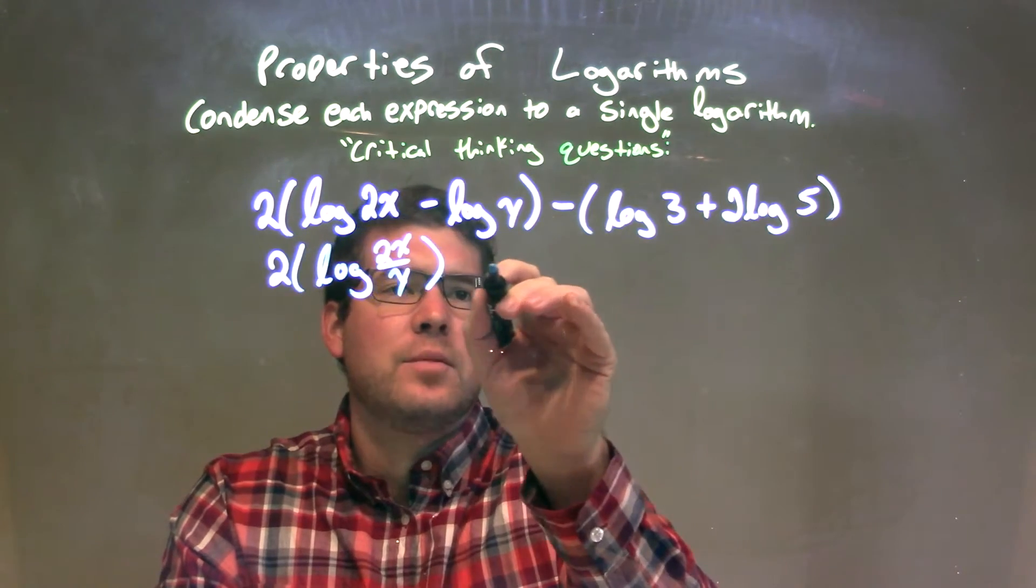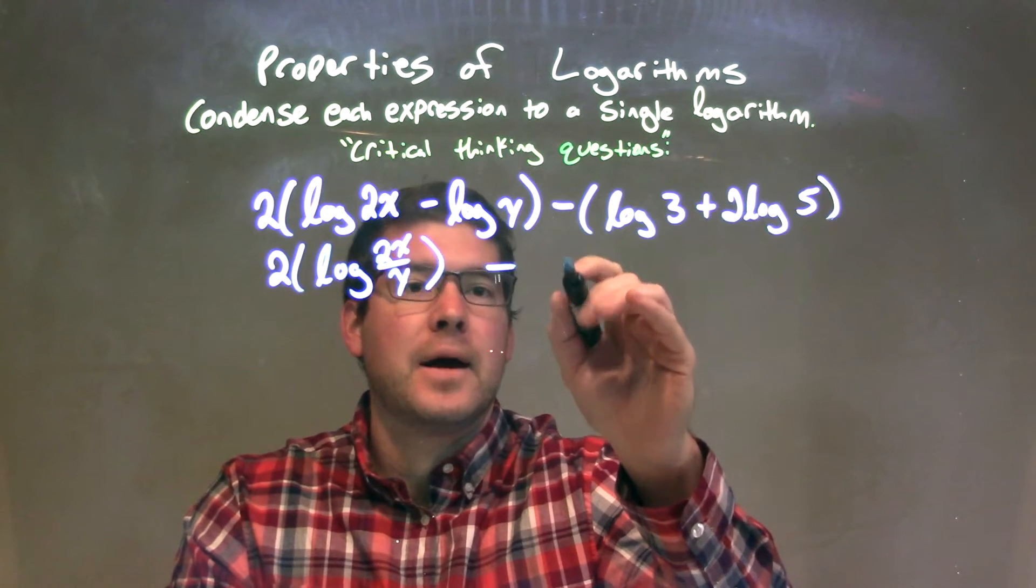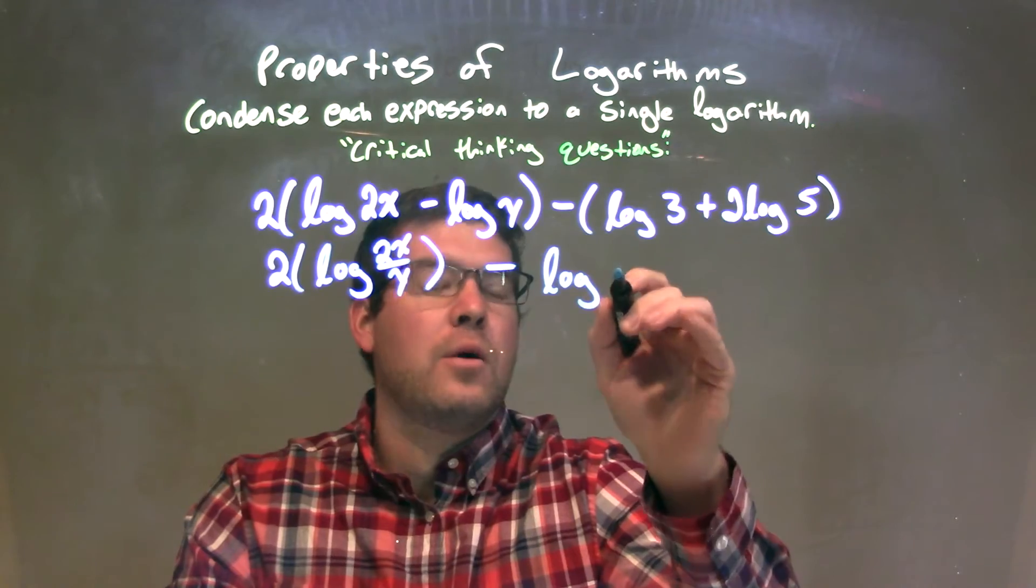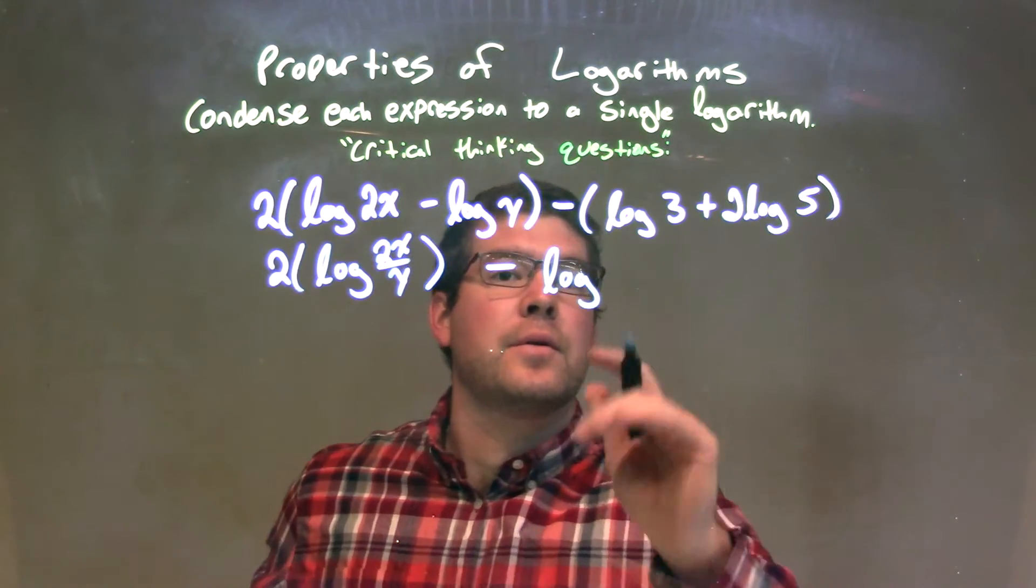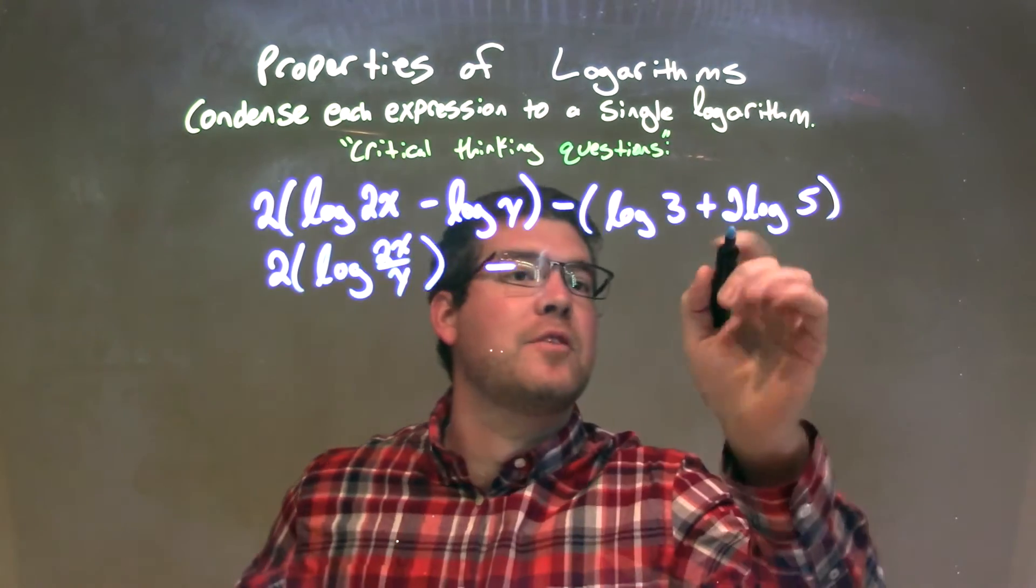Now, we have that subtracted by this one here, which we can condense through multiplication, minus, what is that, log of... excuse me, don't combine it first. We have the 2 power out there, that 2 goes to the 5th power.